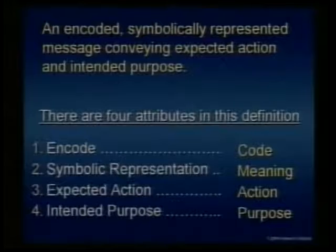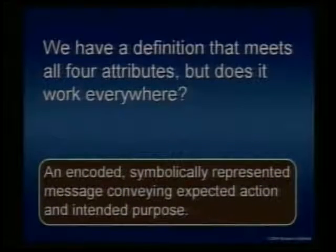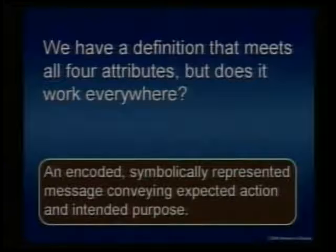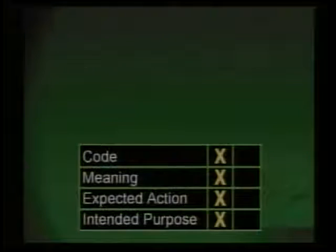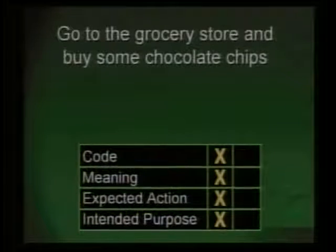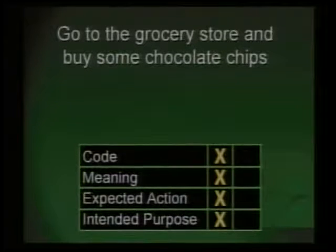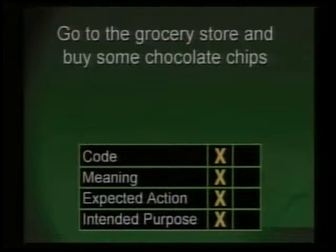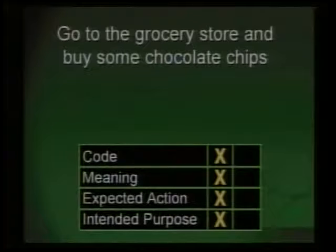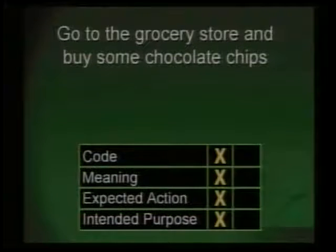Now we have to see — does this work anywhere? We saw it work for the grocery store: 'Go to the grocery store and buy some chocolate chips.' It had a code — the word. Meaning — store represents something physical. Expected action — somebody would go to the store and buy some chocolate chips. Intended purpose — somebody would go and make cookies.